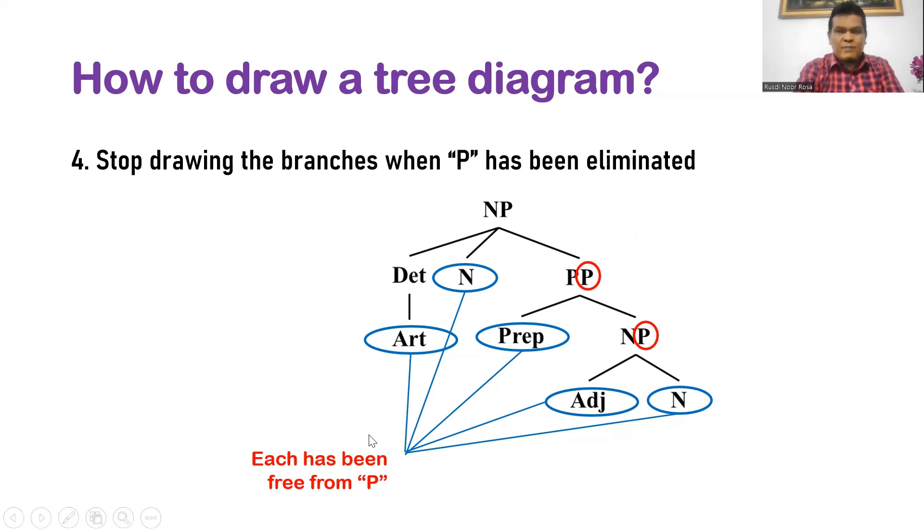But when P has been eliminated, you see article, noun, preposition, adjective, noun, and then you can stop drawing the branches.